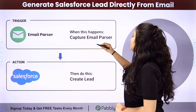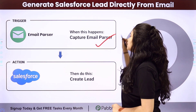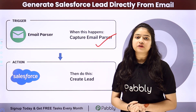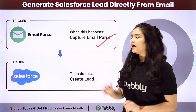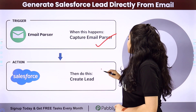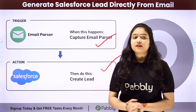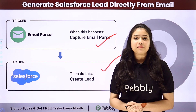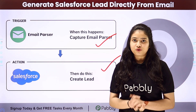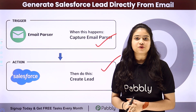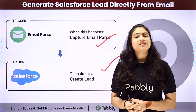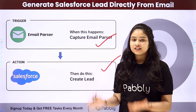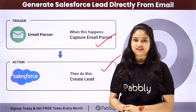We have email parser in our trigger, through which we are going to fetch emails from our Gmail account, and then we have Salesforce in our action. We are going to connect both of them using Pabbly Connect to automate this entire process. Let me take you to my screen to learn this automation step by step.